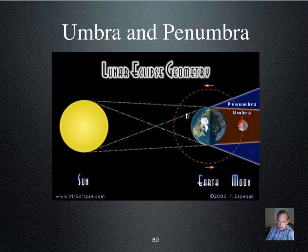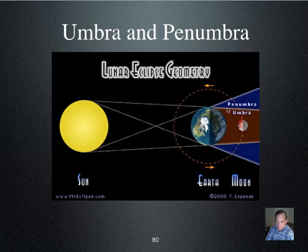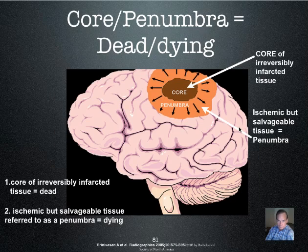The terminology of umbra and penumbra comes from eclipses: the umbra is where light is completely blocked out and the penumbra is where it is only partially blocked. The same concept applies — the umbra is irreversibly ischemic and the penumbra is potentially salvageable.